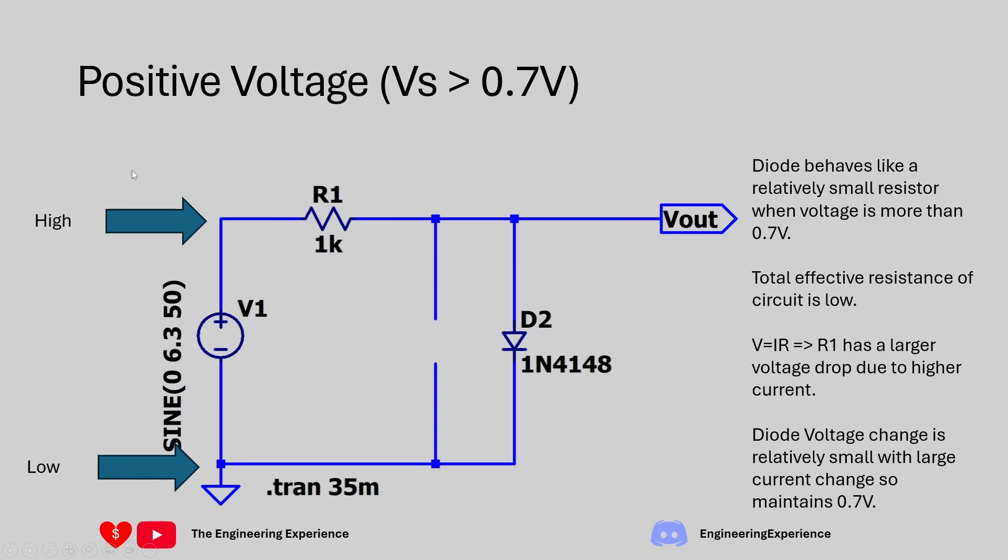Now again for another case where we have a positive voltage again but this time the voltage supply is more than 0.7 volts. So in this case you have the diode entering its conduction phase. So the diode itself will start to drop a lot of current but the voltage across it will not change that much.